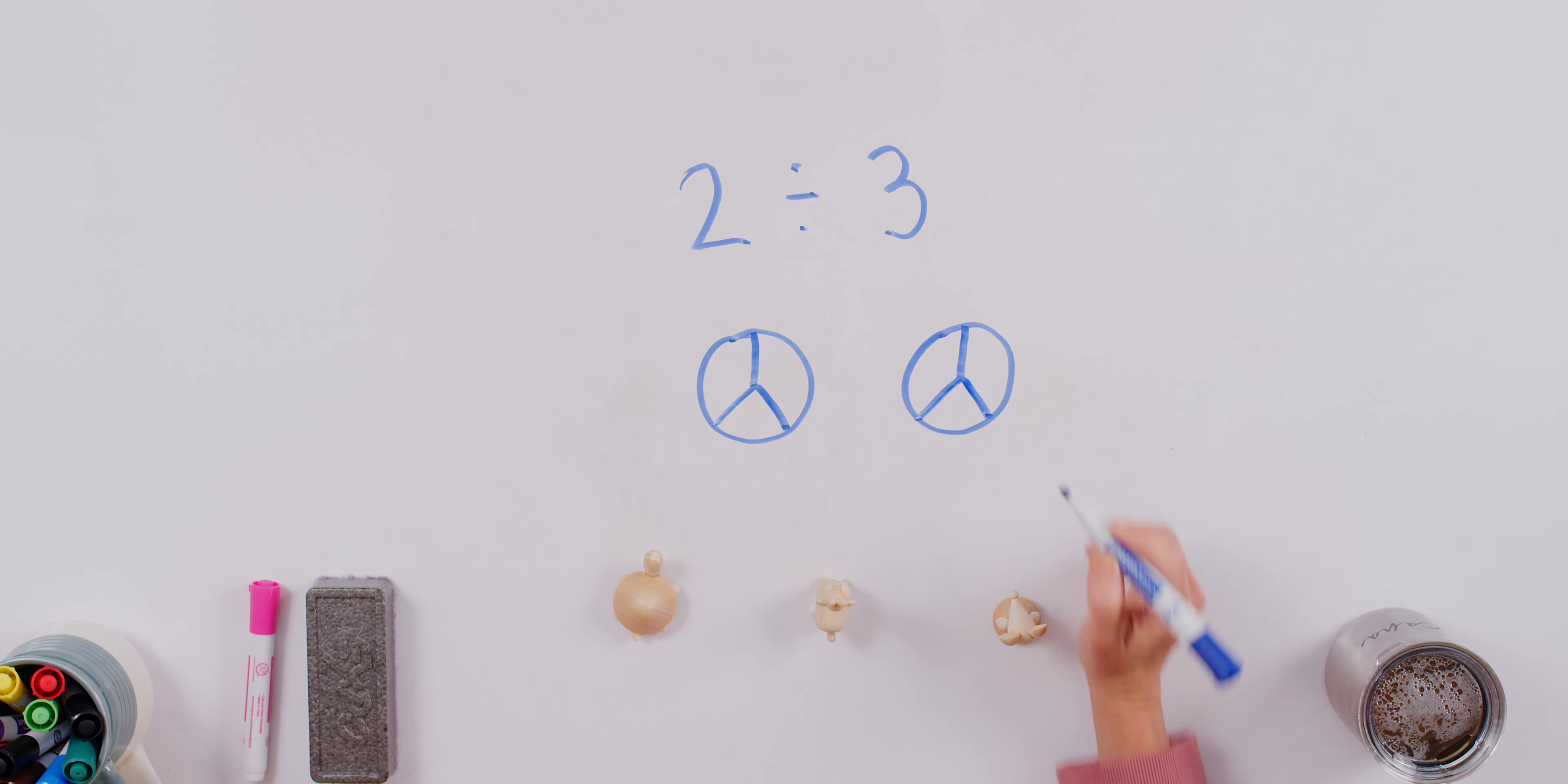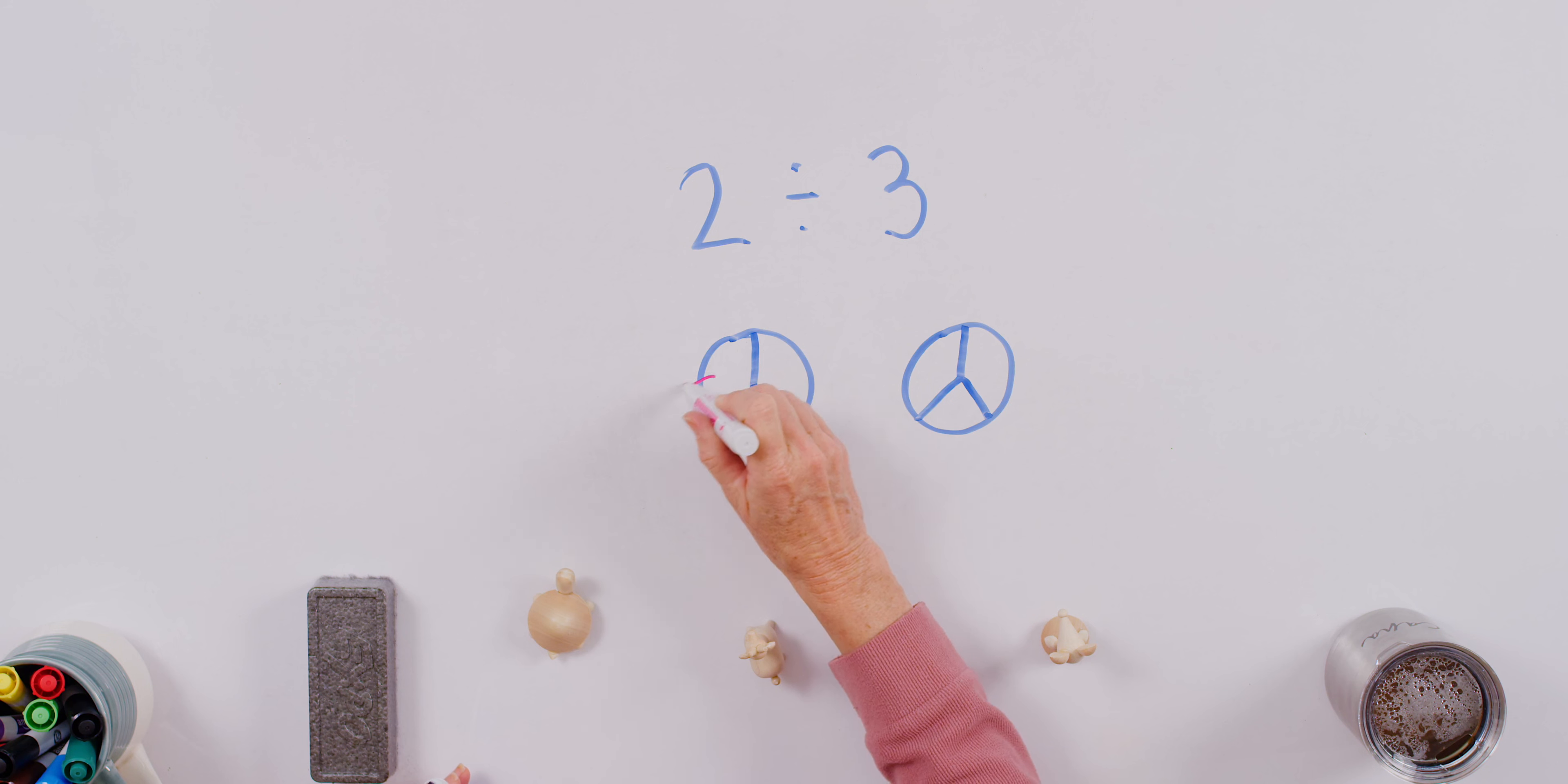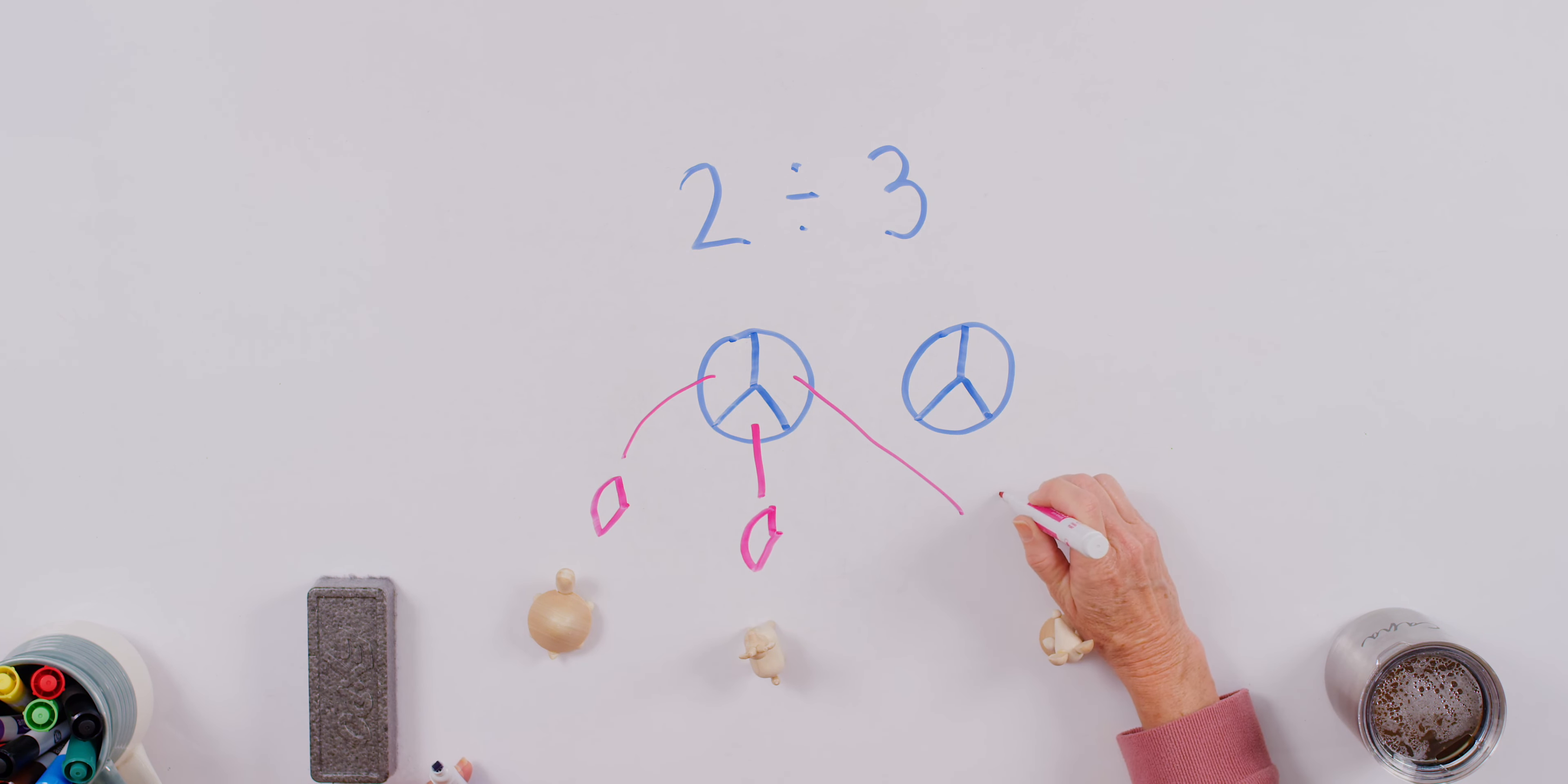And I know that I'm not dividing them perfectly, but you can sort of see. So each one of my cakes is now divided into three pieces. So now I can distribute my pieces, and we'll just use our markers here and arrows. So let's distribute the pieces, one here, one here, and one there. So I'm going to draw now my pieces. Here's one piece. Here's another piece. And here's another piece. I hope you're drawing this with me.